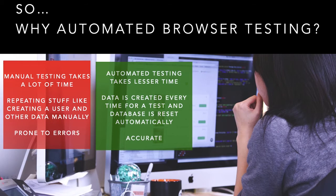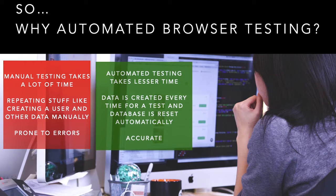With automated testing, it basically takes less time. Users are created automatically, you can assign them roles, populate your database however you want, and create your testing environment separately. Then just run a test and find out if everything is working. The data is created every time for a test and the database is reset at the end automatically — and this happens in a separate environment, not in production, so it won't harm your app.